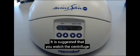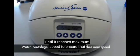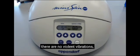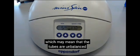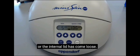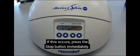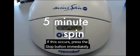It is suggested that you watch the centrifuge until it reaches maximum speed to ensure that there are no violent vibrations, which may mean that the tubes are unbalanced or the internal lid has come loose. If this occurs, press the stop button immediately.